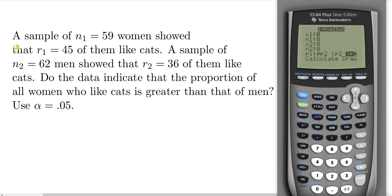Okay, now let's go ahead and read the question. So a sample of 59 women showed that 45 of them like cats, so they give us the N1, that's going to be our first sample size, so that will be 59. And they use R instead of X, so some books use R instead of X for successes, so we have 45 successes, so success in this case is liking cats.